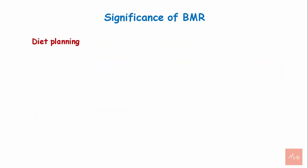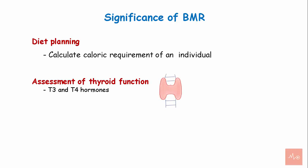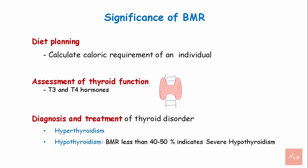Significance of the basal metabolic rate. Assessment of BMR can help in diet planning by calculating the caloric requirement of an individual. BMR assessment can also aid in evaluation of thyroid function through T3 and T4 hormone levels, and in the diagnosis and treatment of thyroid disorders like hypothyroidism and hyperthyroidism. BMR less than 40 to 50% indicates severe hypothyroidism.